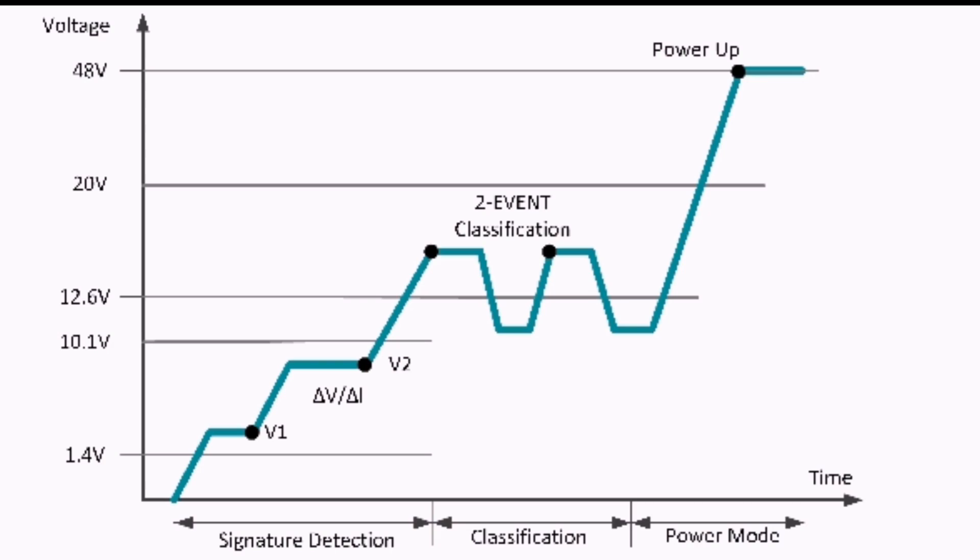So we have our signature detected and we know our power range - we're ready to apply full voltage. Our 48-volt supply from our power sourcing equipment is connected to our powered device through the RJ45 cable.